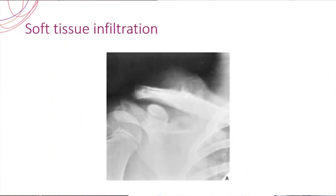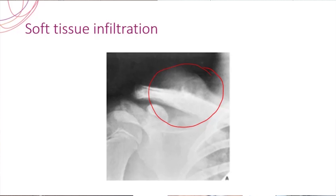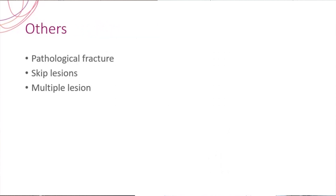It is better if you could comment about the soft tissue infiltration. Even in the last slide of osteosarcoma, you could see the periosteal reaction is expanding much into the soft tissue, and even in this case, a lesion from the clavicle is expanding itself into the soft tissue. Never ever forget to look for a pathological fracture and to search for skip lesions in the given X-ray and look for any multiple lesions — those things are very, very important.